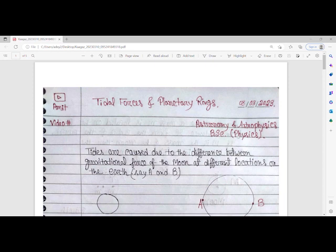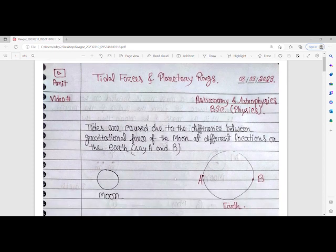This comes under the astronomy and astrophysics subject of BSc undergraduate course. Tides are caused due to the difference between gravitational force of the moon at different locations on Earth, say A and B.